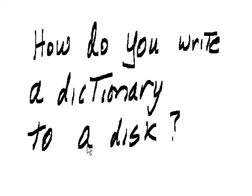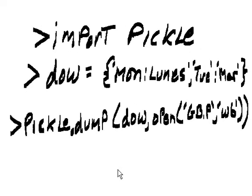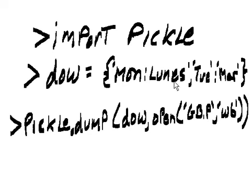How do you write a dictionary to disk? Import pickle. Create a dictionary: dow = {'Monday': 'lunis', 'Tuesday': 'martis'}.